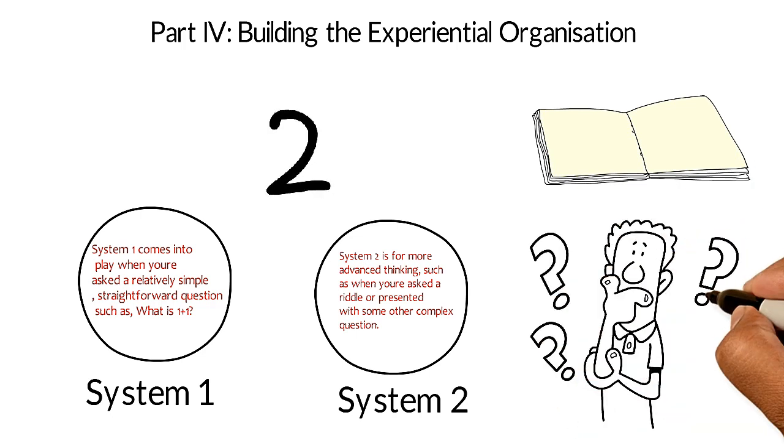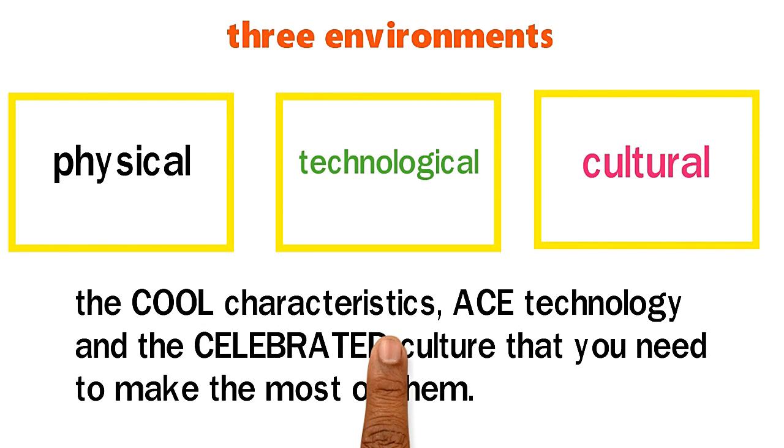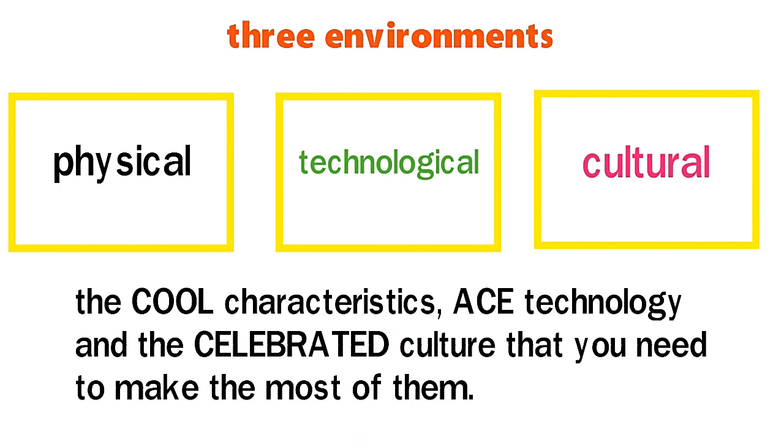By now, if you've been following along at every step of the way, you should have your reason for being and a thorough understanding of the three environments—physical, technological, and cultural—and the cool characteristics, ACE technology, and the celebrated culture that you need to make the most of them.